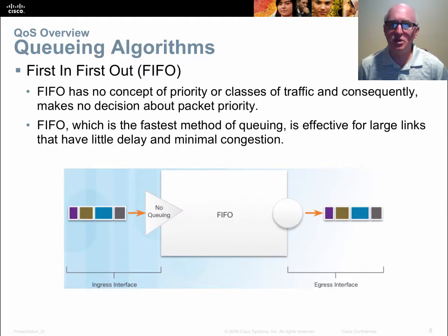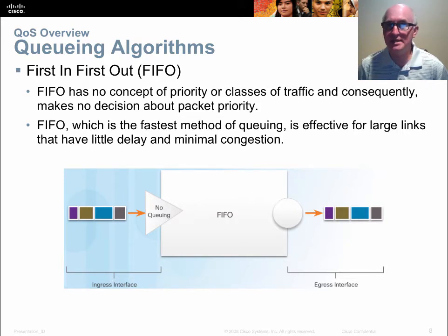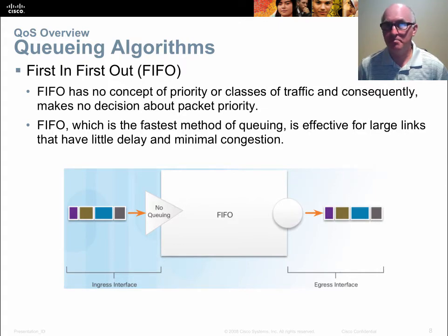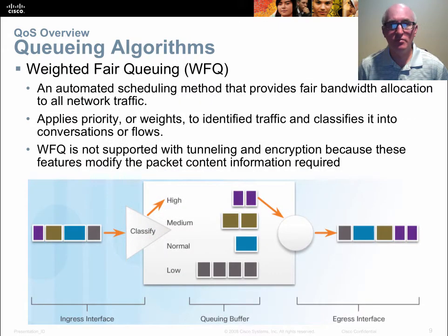Typically, an interface is going to use what we call FIFO — first in, first out buffering. When packets arrive on an interface, they line up on a first come, first serve basis. The first packet to get in line is the next one to go out the interface and so on. This is the fastest, most effective way of queuing when you have enough bandwidth. So if we don't have bandwidth congestion, we want to use FIFO buffering. Once we get congestion, then we want to start using QoS mechanisms.